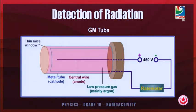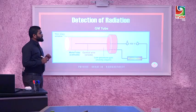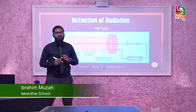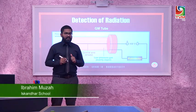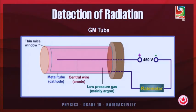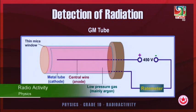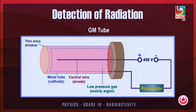Now we will look into detection of alpha, beta, and gamma radiation. To detect radiation we use a GM tube — short for Geiger-Müller tube. This GM tube is made up of a cathode and an anode, connected to a power supply and a rate meter, also called a count meter.